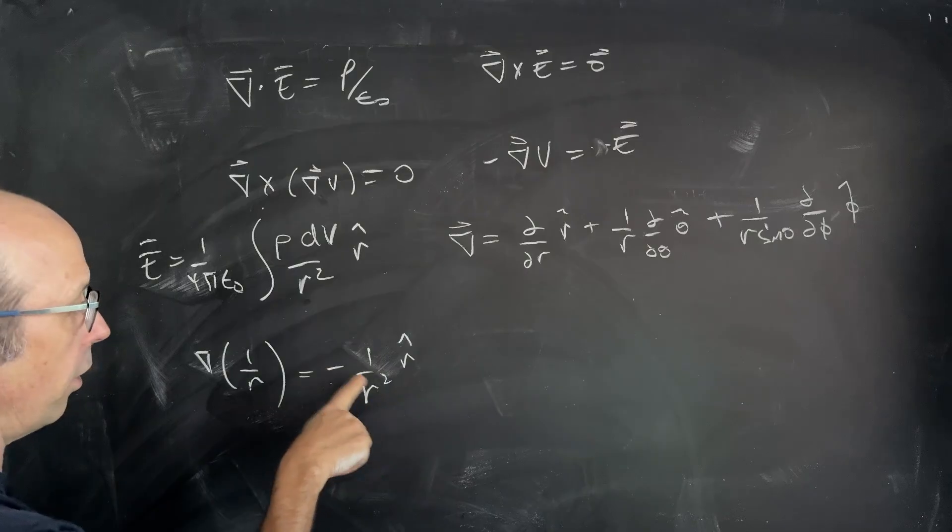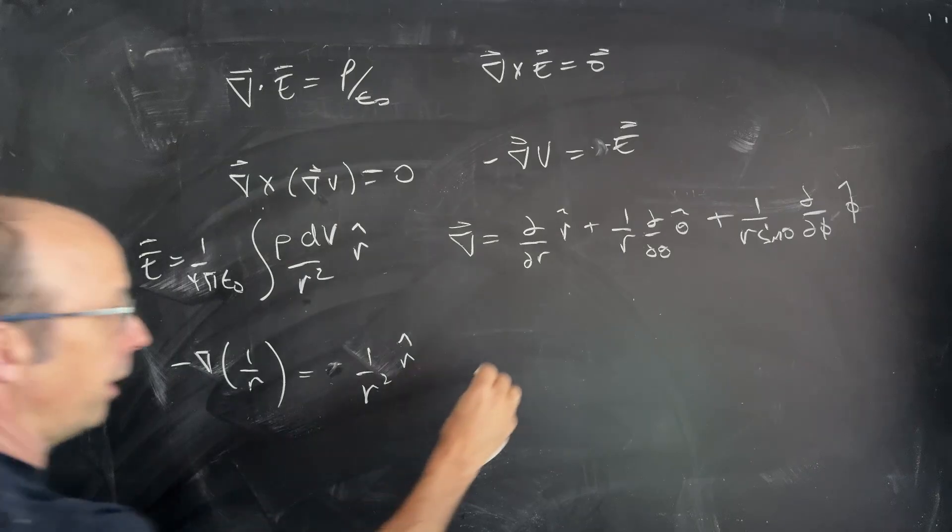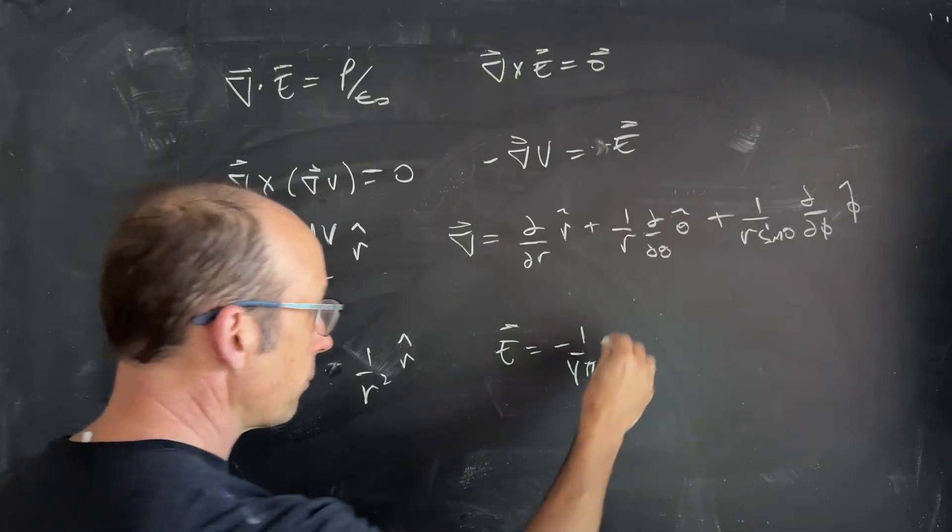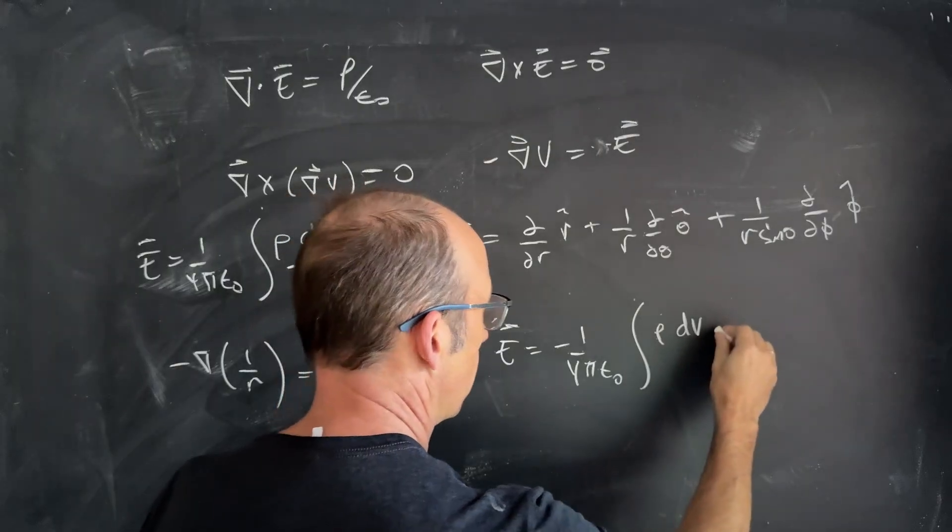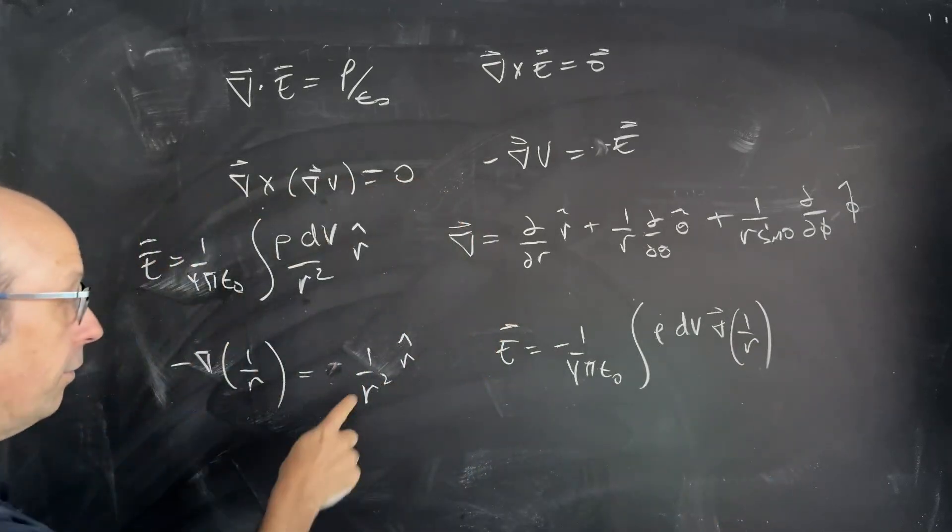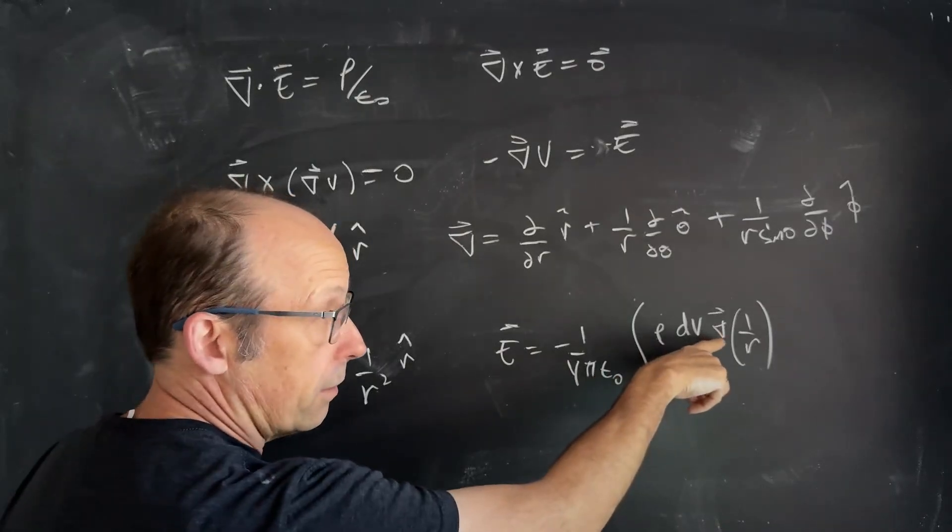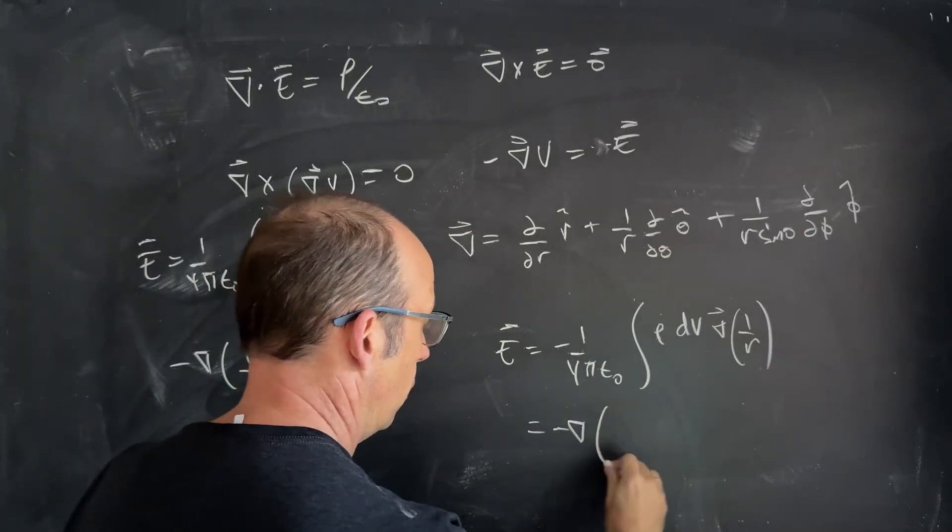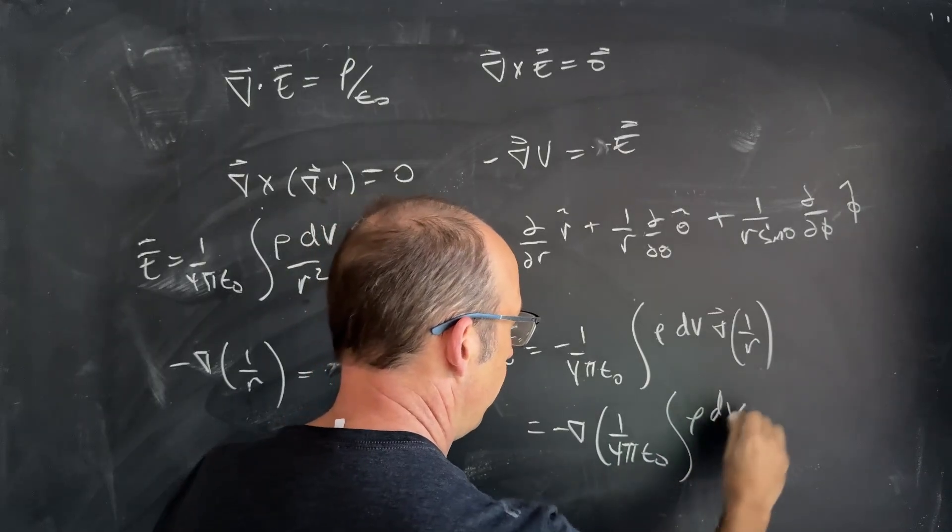So, one over R squared R hat, I can move this over here, negative. I can put that in up here, and I can write E as negative one over four pi epsilon naught rho DV del one over R. That gives me the one over R squared R hat.